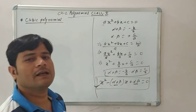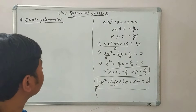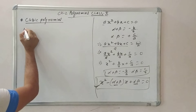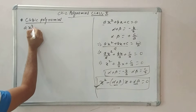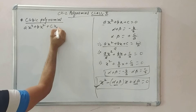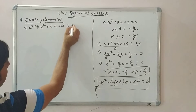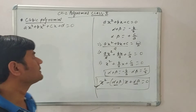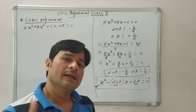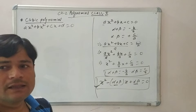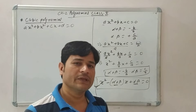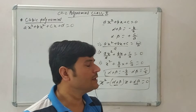Today we will discuss cubic polynomials and the relation between their roots. A cubic polynomial is of the form ax³ + bx² + cx + d = 0. Cubic polynomials की degree हमेशा 3 होनी चाहिए — bi-quadratic polynomials के लिए degree 4 होती है।